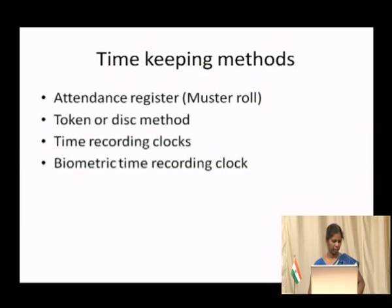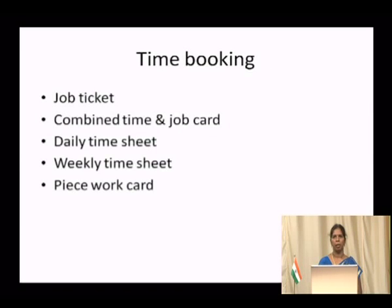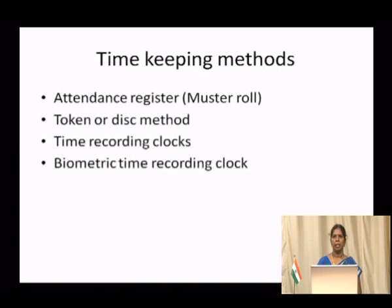A major disadvantage of the attendance register method is that proxy signatures may be put by one worker on behalf of another — that is, a worker's friend may sign on his behalf. That is the major disadvantage of the attendance register method.